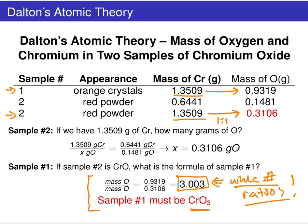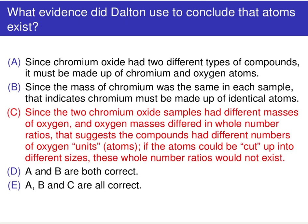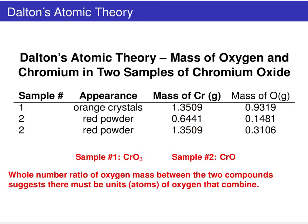That is in fact the evidence that allowed Dalton to conclude that atoms exist — the first strong empirical, experimental evidence for the existence of atoms. These whole number ratios showing up time and time again.